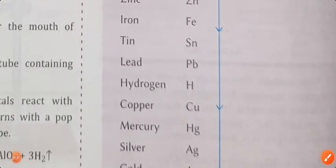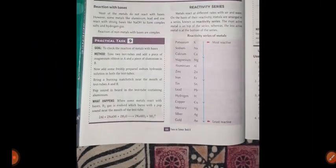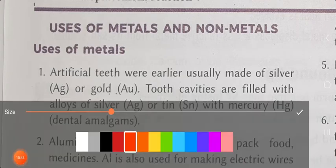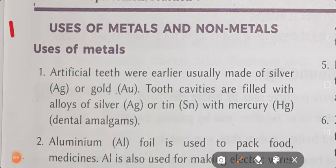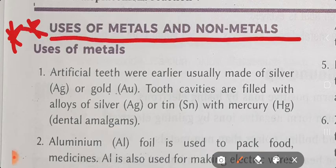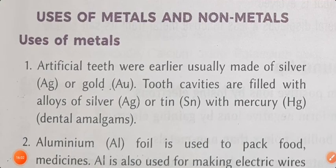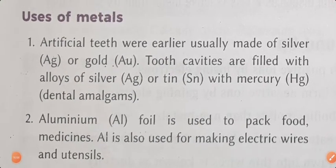Now open page number 45. Uses of metals and non-metals. Students, this topic is very important - put 2 stars and underline this topic. Uses of metals and non-metals will definitely be asked in your test and exam. Now uses of metals, point number 1: artificial teeth were earlier usually made of silver and gold.